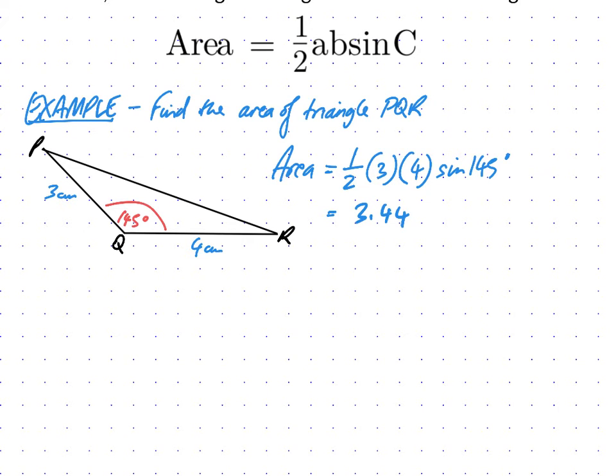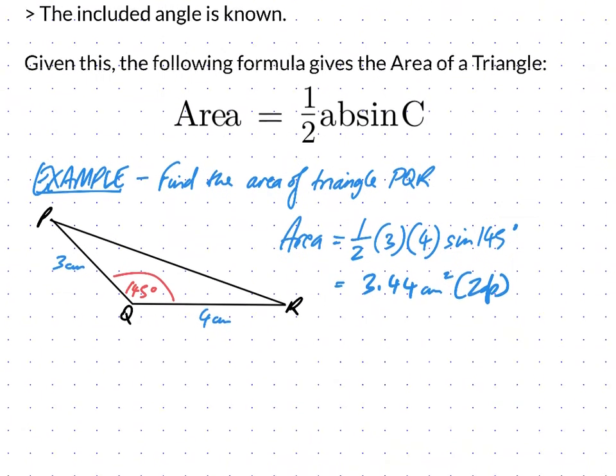And it's centimeters to two decimal points. Now it's area, so it's actually square centimeters. Centimeters is the units used for the lengths, but we're finding the area of the triangle, so it's going to be square centimeters as the units.